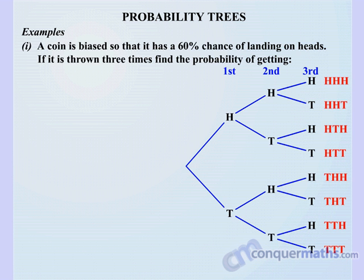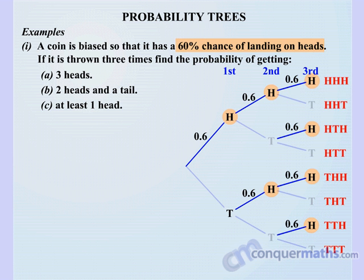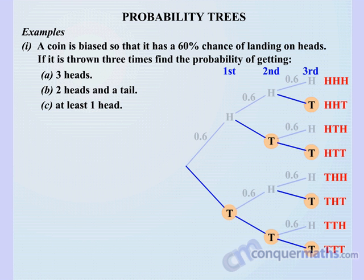Let's look at an example. A coin is biased so that it has a 60% chance of landing on heads. If it is thrown three times, find the probability of: a) three heads, b) two heads and a tail, or c) at least one head. Normally when we toss a coin we expect a 50-50 chance, but this coin is biased — 60% chance of landing on heads, so we write 0.6 on each branch leading to heads, and 0.4 on each branch leading to tails.